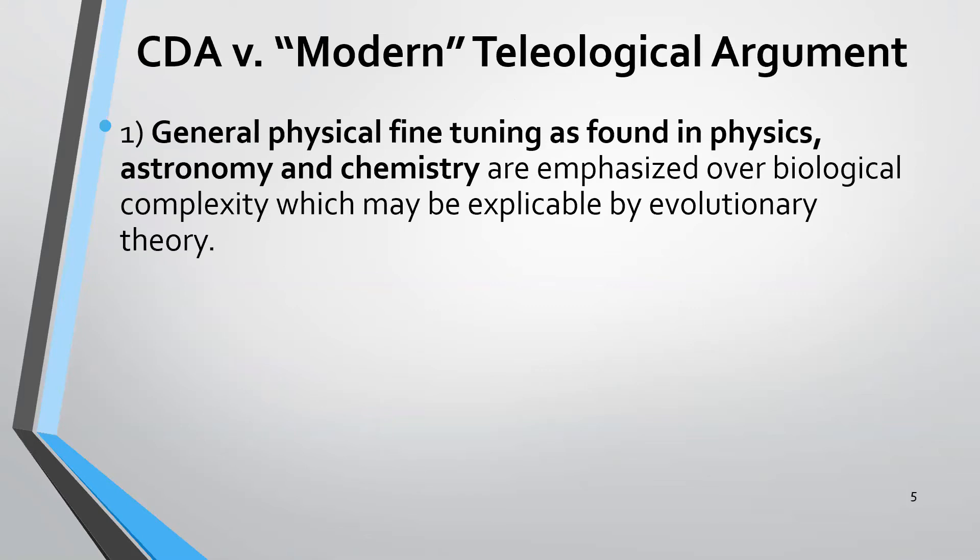Put it into context with other arguments for the existence of God. Here we're talking about general physical fine-tuning found in physics, astronomy, and chemistry. These are the things that are emphasized in the Contemporary Design Argument over biological complexity, which might be explicable by evolutionary theory.